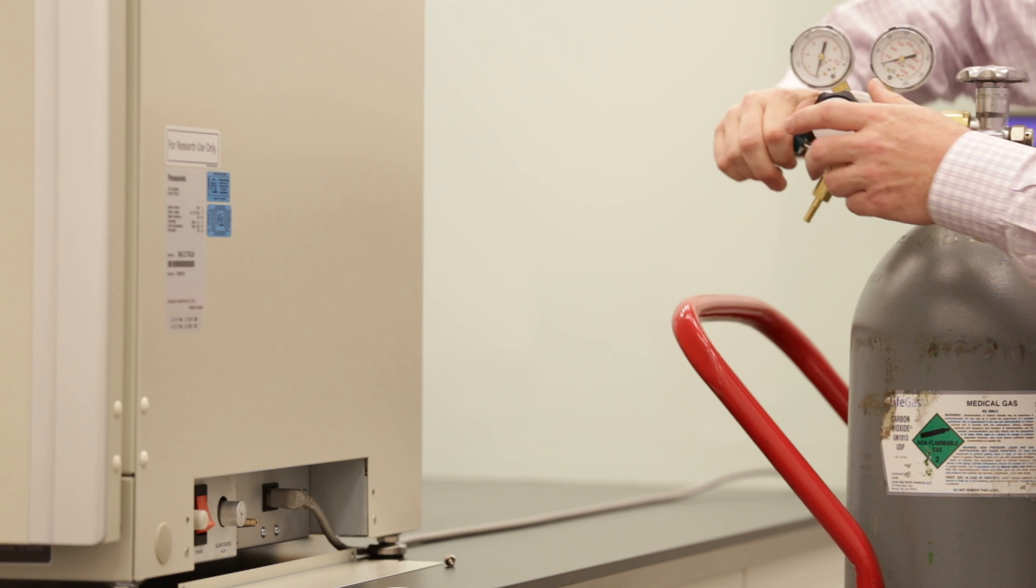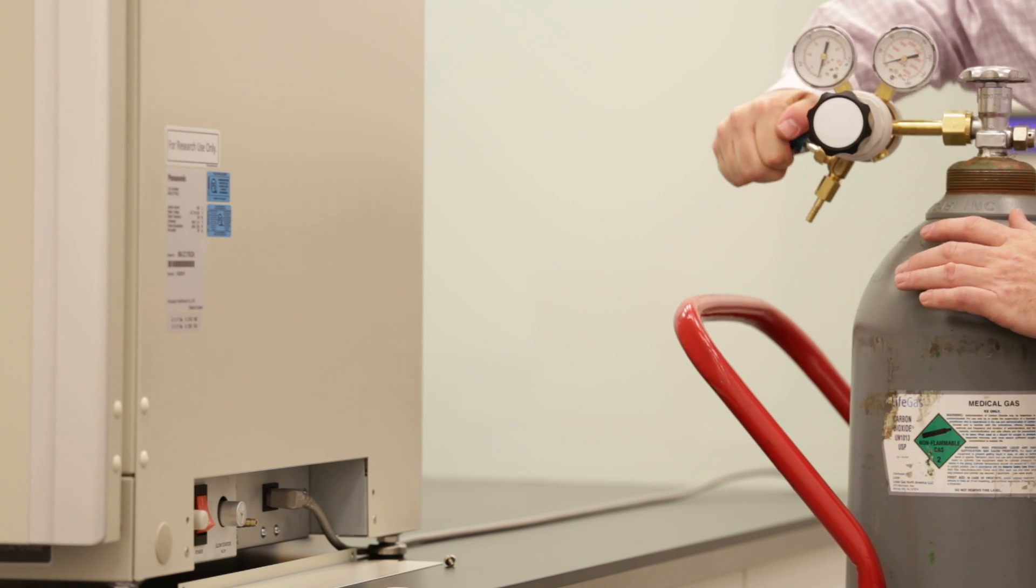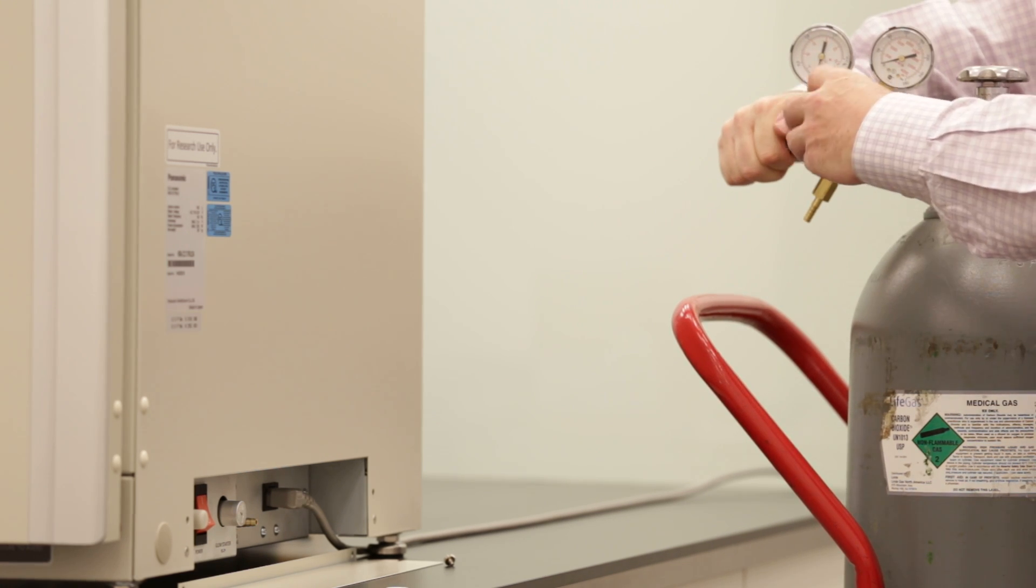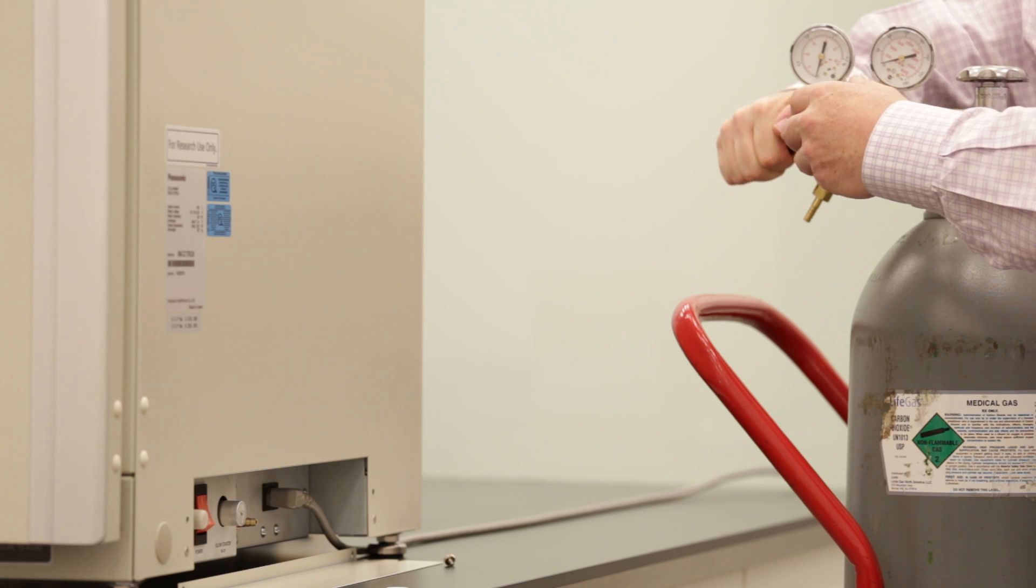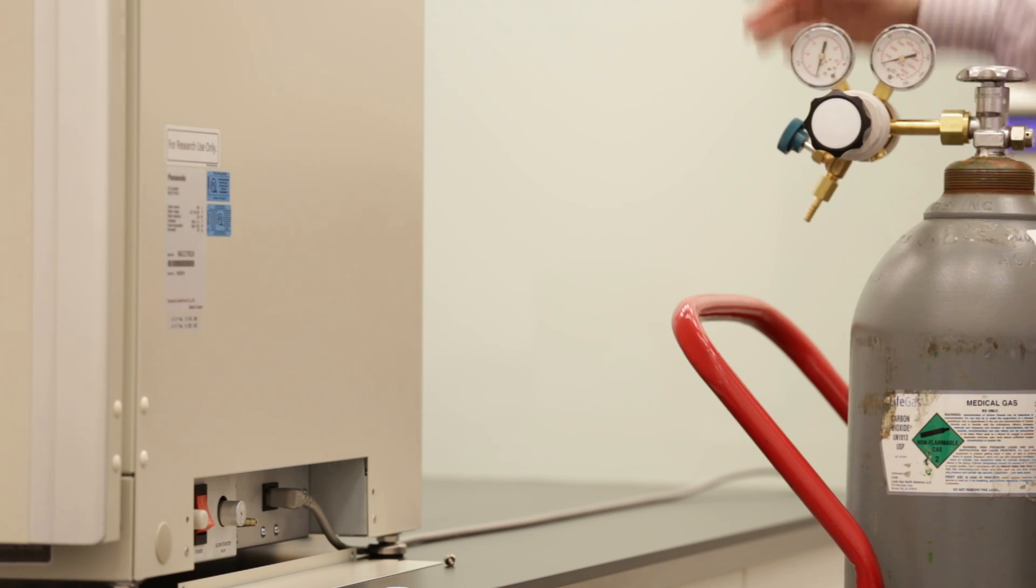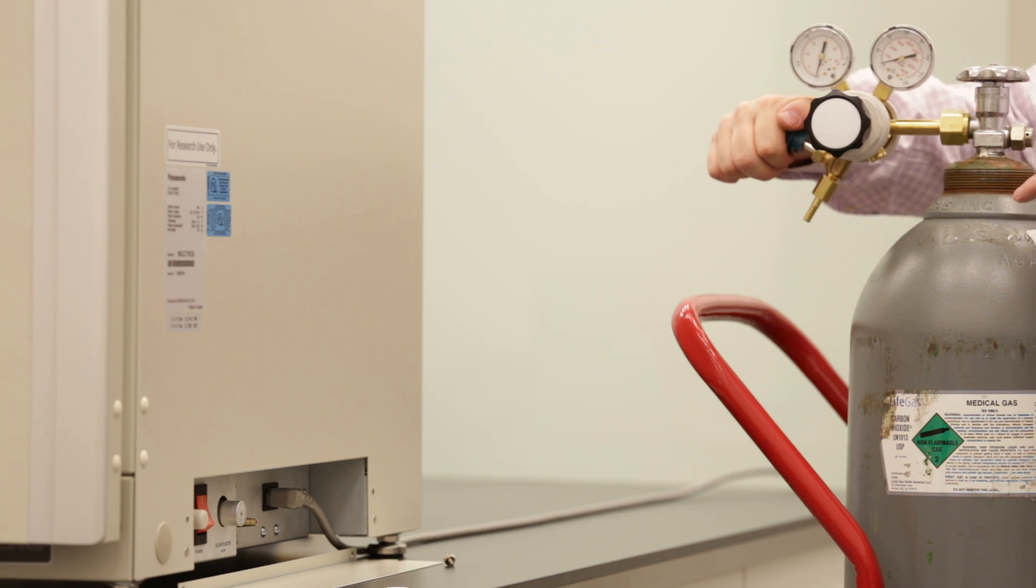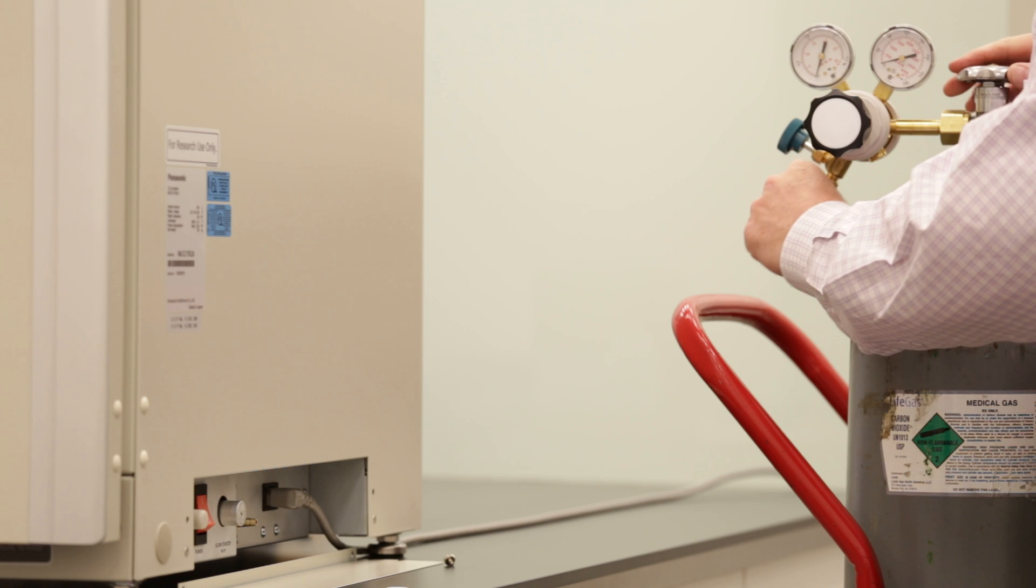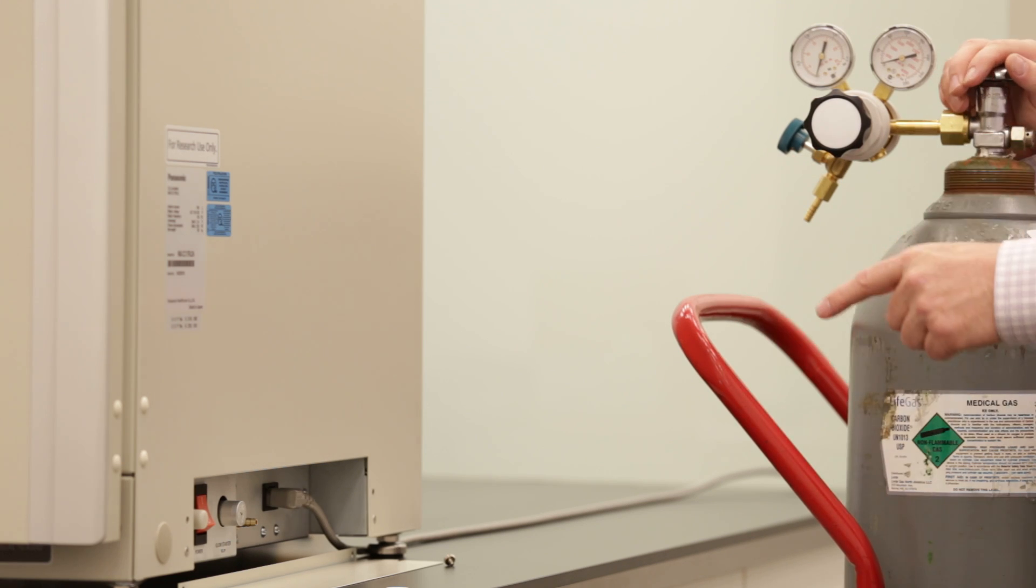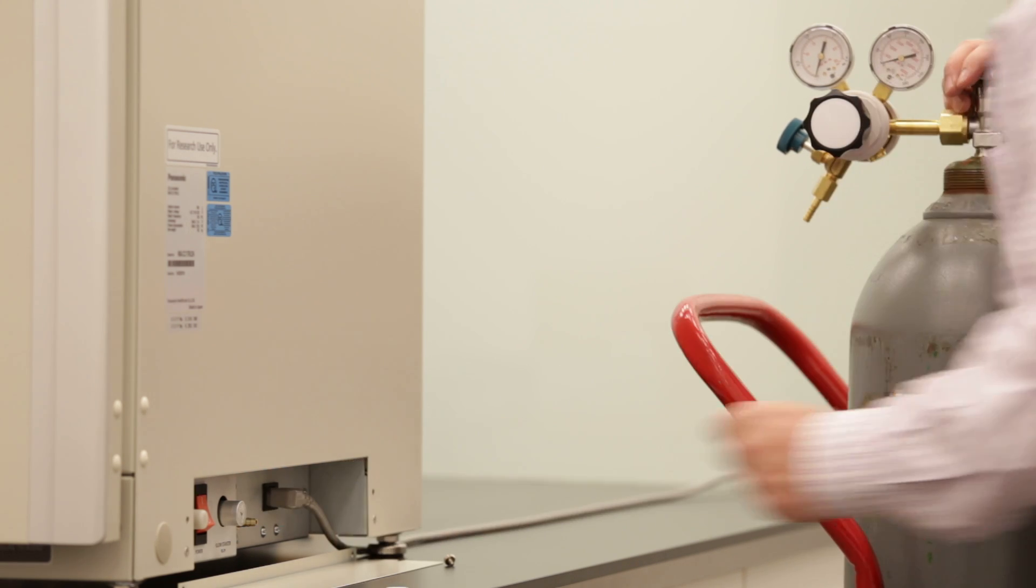You want to make sure that your outlet valve is closed completely and that your pressure regulator is open as well, so that you're not over-pressurizing. This is a very common issue with changing tanks on CO2 incubators—making sure that these valves are closed so that we're not over-pressurizing and causing the lights to pop off on the incubator.